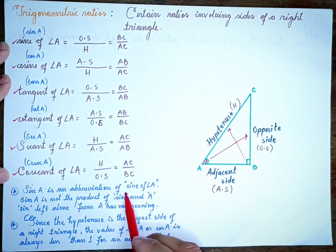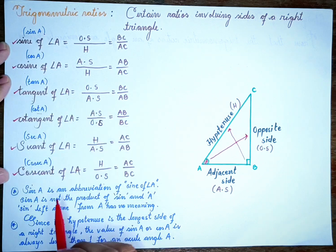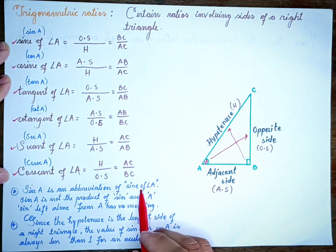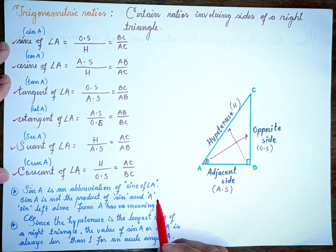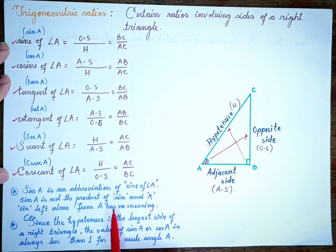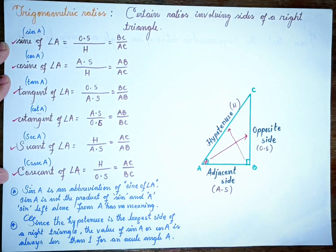Sine A is an abbreviation of sine of angle A. Sine A is not the product of sine and A. Sine left alone from A has no meaning — sine A is not the product of sine and A.